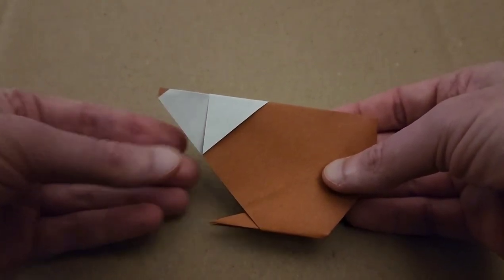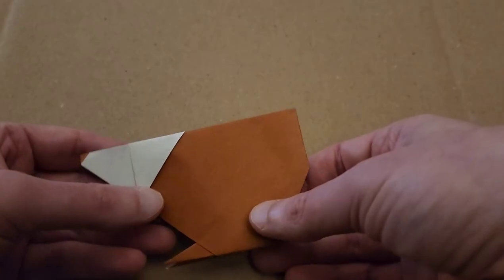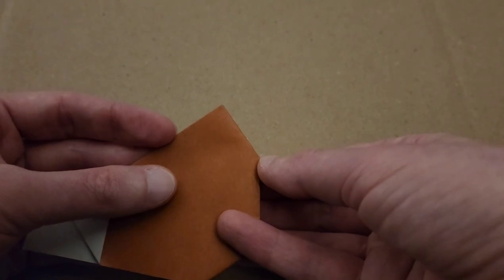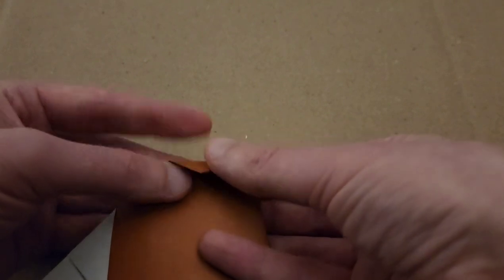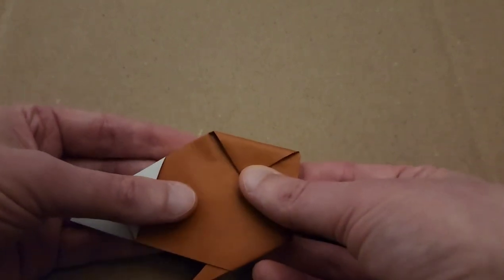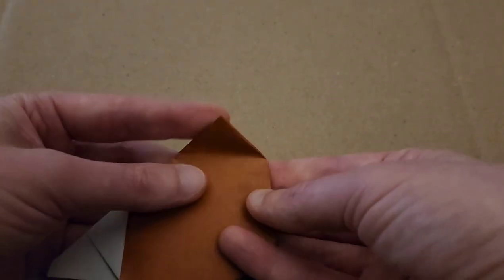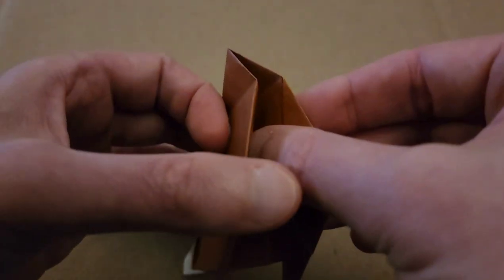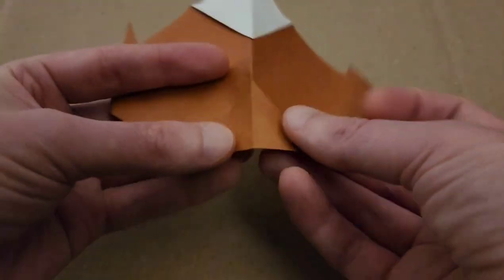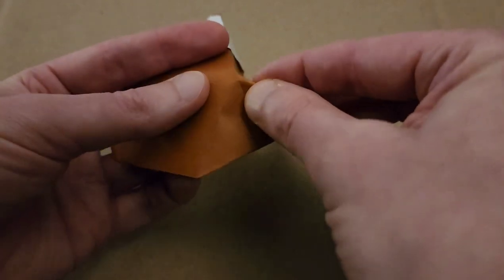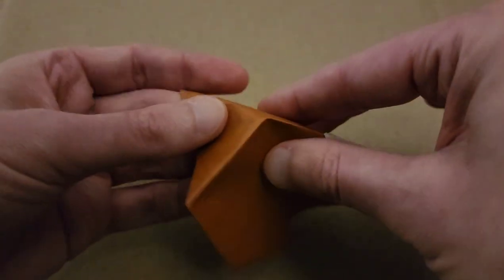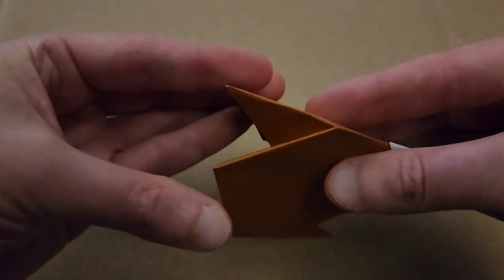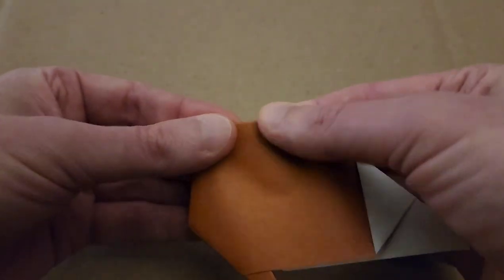And believe it or not, we are actually pretty darn close to being done already. Now what I like to do is just really flatten this out and make our creases nice and firm. Flatten them out. All right. All right. Now we just have a few more steps and he shall be done. All right. So now we are going to work on his little derriere. So from this point here to about this point here, we're going to fold this tip down. The angle is really not that crucial, but roughly speaking, using this point as a guide. So give it a good crease. Open it up.